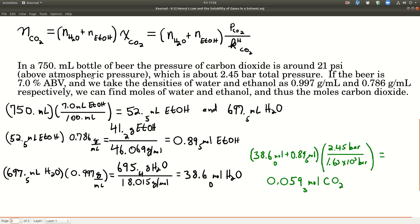Now if the beer is about 7% alcohol by volume, if we know the density of water and ethanol, and we're also going to need Henry's law constant where we can look that up, we can find out how many moles of carbon dioxide are in that bottle of beer by using this equation right here. So we're going to need to know the moles of water and the moles of ethanol.